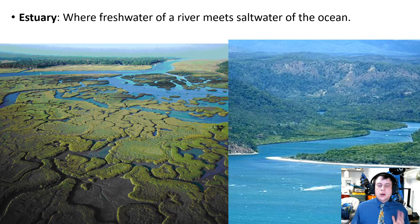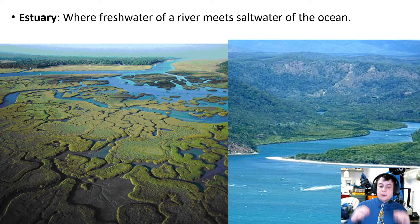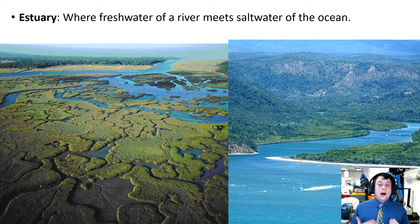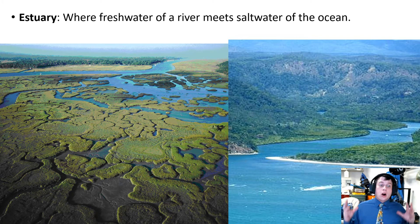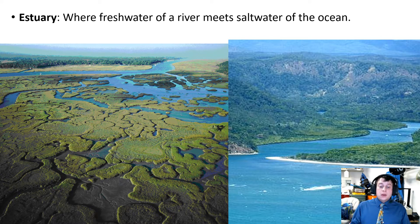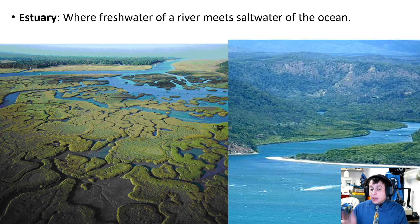To look at the marine ecosystems, I want to work from the perspective of going from the shoreline and working our way out. So the first place we need to start are estuaries. An estuary is where a river meets the ocean. What kind of water is in a river? Fresh water. What kind of water is in the ocean? Salt water.